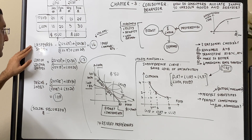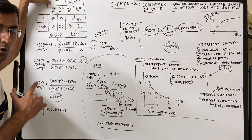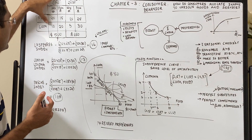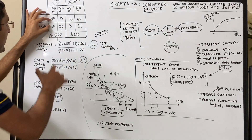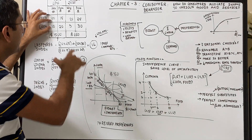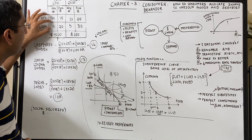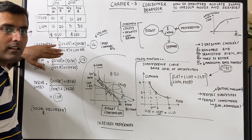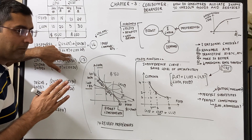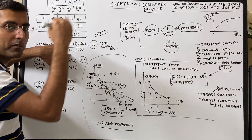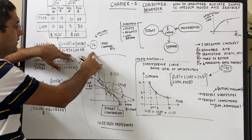The Laspeyres index compares the base year's quantity at current year prices versus base year prices. So: (20×25 + 10×30) divided by (20×15 + 10×20). This asks: if I were to buy the same quantities of food and clothing from 2010 at today's prices versus 2010 prices, how much more would it cost? That comes out to 1.6 — meaning costs have gone up by 60%.